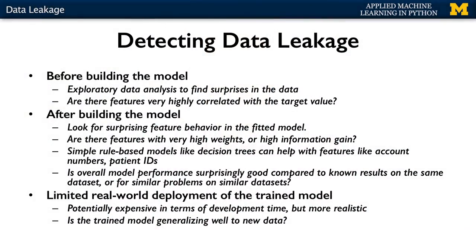How can you detect and avoid data leakage in your applications? Before building the model, exploratory data analysis can reveal surprises in the data — for example, look for features very highly correlated with the target label or value. From the medical diagnostic example, this might be the binary feature indicating a patient had a particular surgical procedure, which might be extremely highly correlated with a particular diagnosis. After building the model, look for surprising feature behavior such as extremely high feature weights or very high information gain associated with a variable.